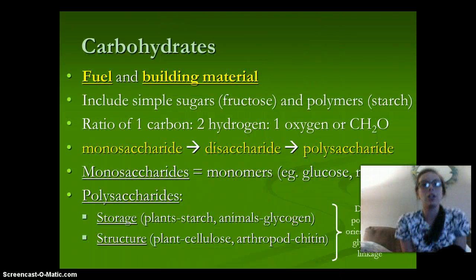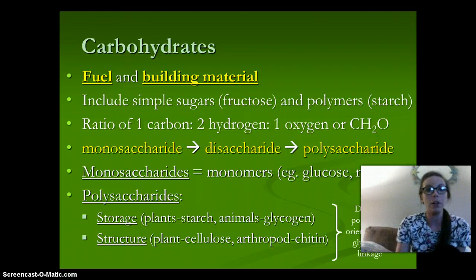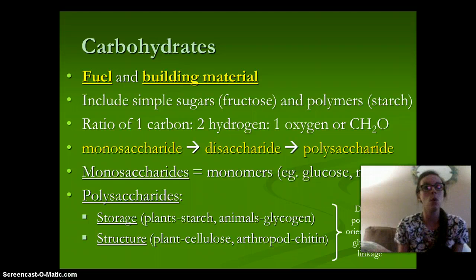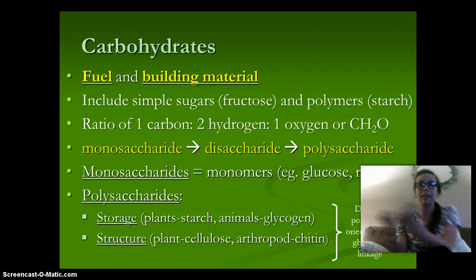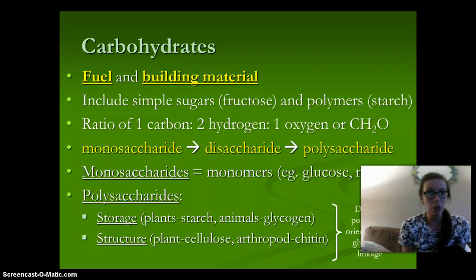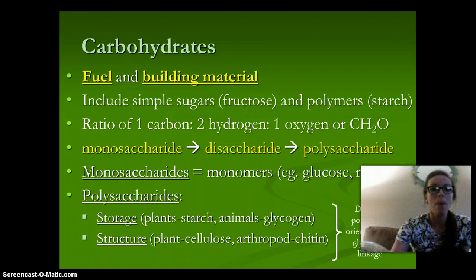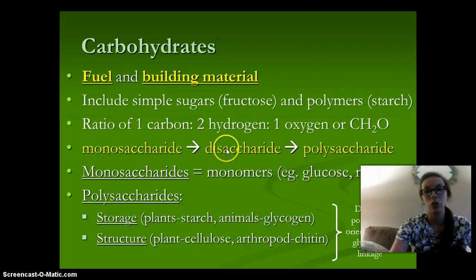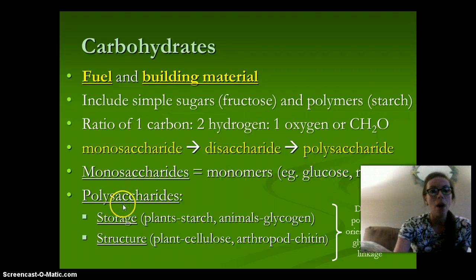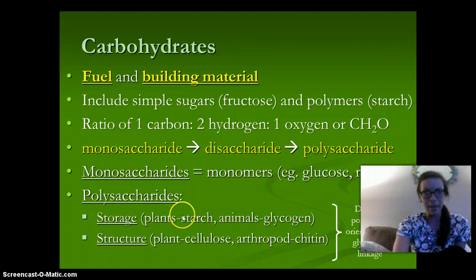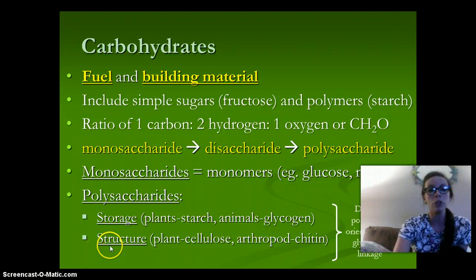Carbohydrates are the first group of macromolecules. Their function is fuel and building material. These include simple sugars such as fructose and glucose, and then polymers linked together, which would be our starch. The ratio is one carbon to two hydrogen to one oxygen, or CH2O. A monosaccharide is a single sugar, a disaccharide is two, and a polysaccharide is many linked together. Monosaccharides are our monomers and include glucose and ribose. Polysaccharides are used for storage — starch in plants, glycogen in animals — and for structure: cellulose in plants and chitin in arthropods.